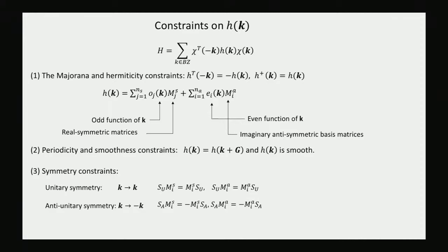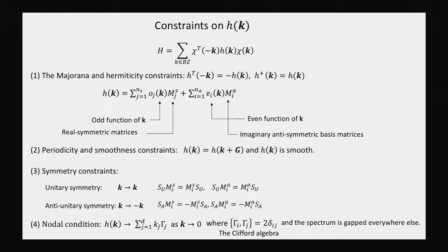Third, you must implement all symmetry constraints. Unitary symmetries that leave k invariant are represented by matrices that commute with both the symmetric and anti-symmetric parts. Anti-unitary symmetries such as time reversal send k to −k; their representing matrices must anti-commute with both the symmetric and anti-symmetric matrices. Finally, H(k) must approach the nodal form k_i γ_i as k goes to zero, where the gammas obey the Clifford algebra. Any lattice Hamiltonian must obey all these constraints.